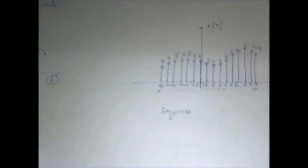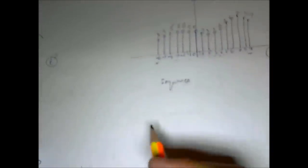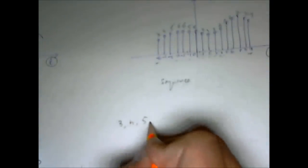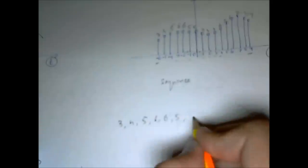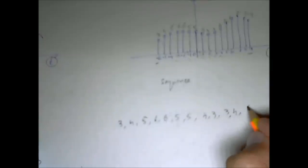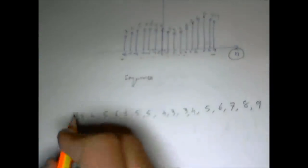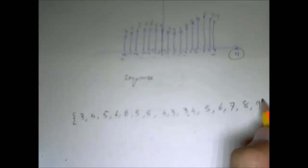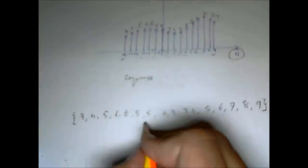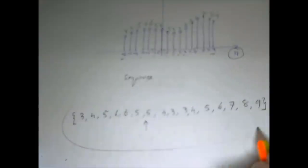Another notation for discrete time signals, another way to write them down, is just to list the numbers itself. So this is basically 3, 4, 5, 6, 6, 5, 5, 4, 3, 3, 4, 5, 6, 7, 8, and 9. And we enclose this in curly braces. Also we need to know where the origin is. The origin is here, so we use a little arrow over here. This is another way to write a discrete time signal.